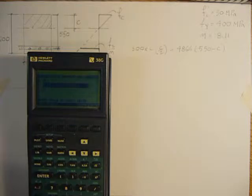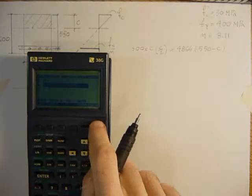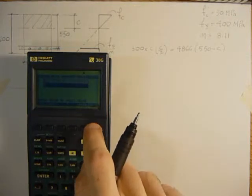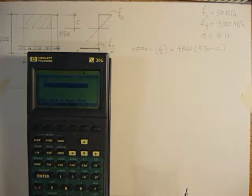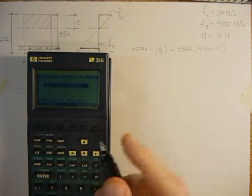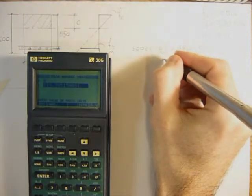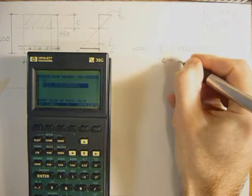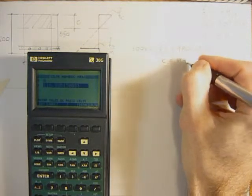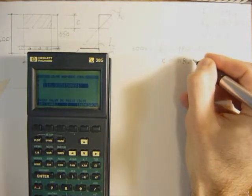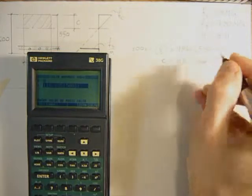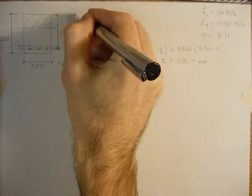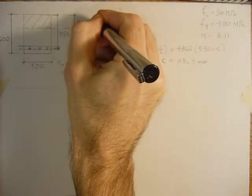So it's already worked it out: 118.335. I'm just going to put it to zero and make sure, I'm going to resolve it. 118.335, so C equals 118.3 millimeters.